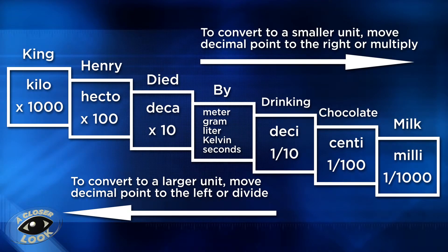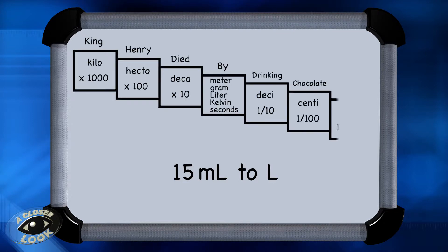Now, let's do some practice problems that involve metric conversions. First, let's convert 15 milliliters to liters. So let's bring up the King Henry died by drinking chocolate milk chart.